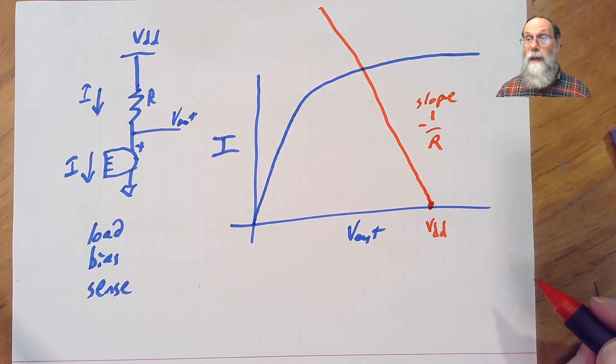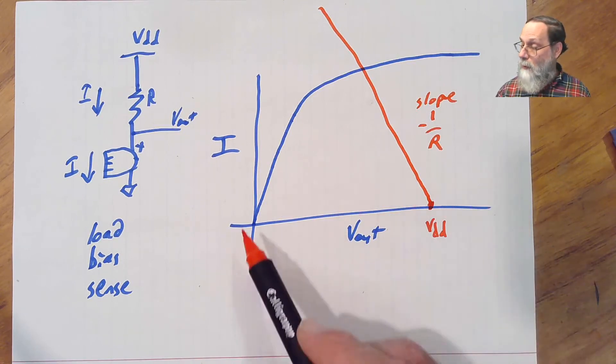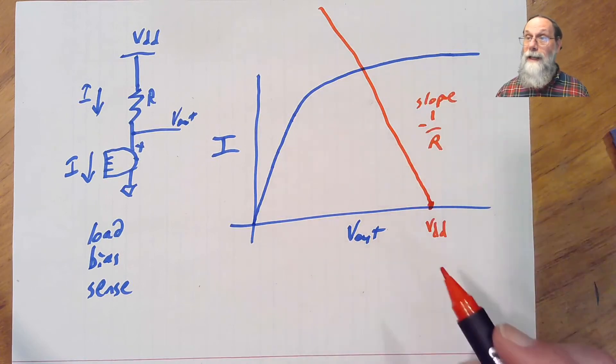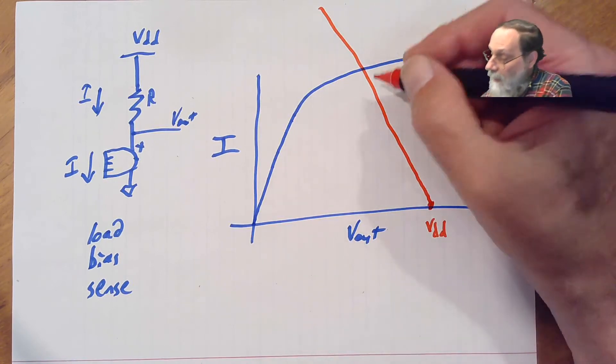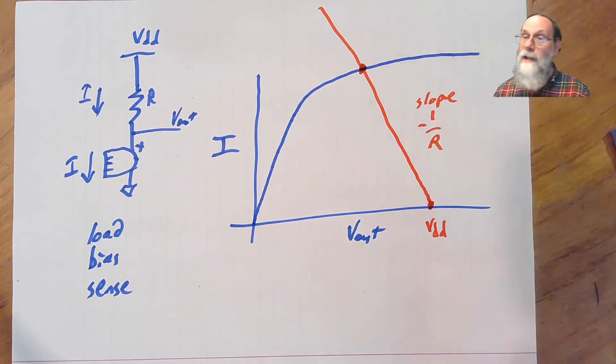Where is this thing operating? Well, we said that the currents had to be the same. So that means that the current on the blue line, the current on the red line have to be the same. Where those two curves intersect is the operating point for this microphone.